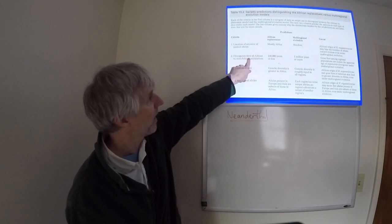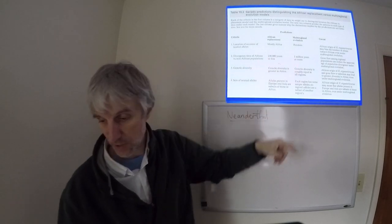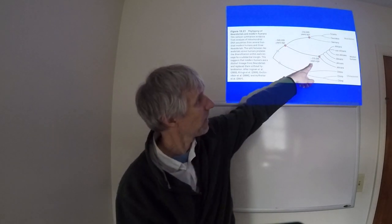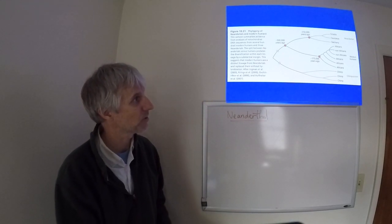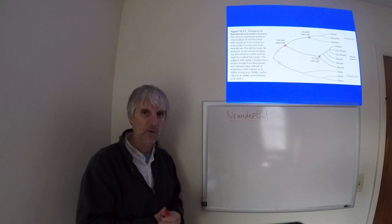Divergence time of all humans, 200,000 years or less versus a million. That's less than 200,000. That suggests that humans started in Africa and then branched out from there.